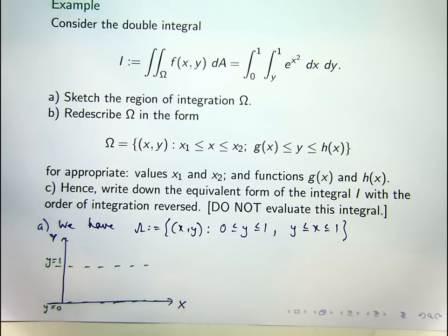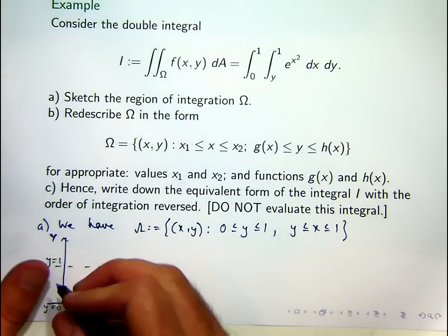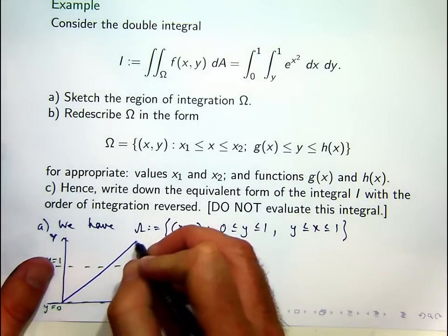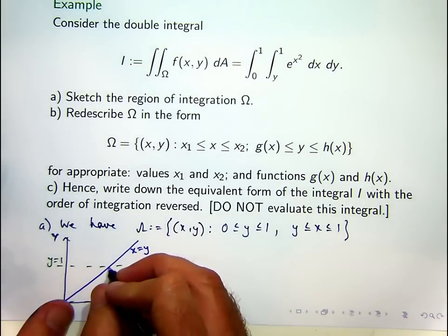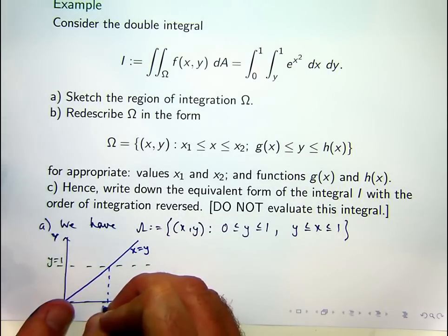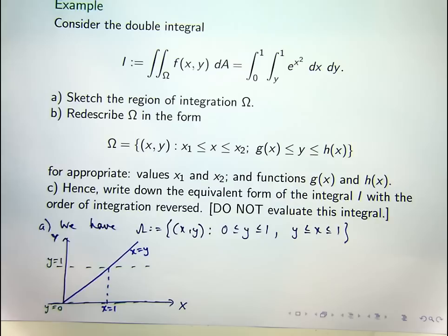The line x equals y is just this one, and the line x equals 1 is just this one.